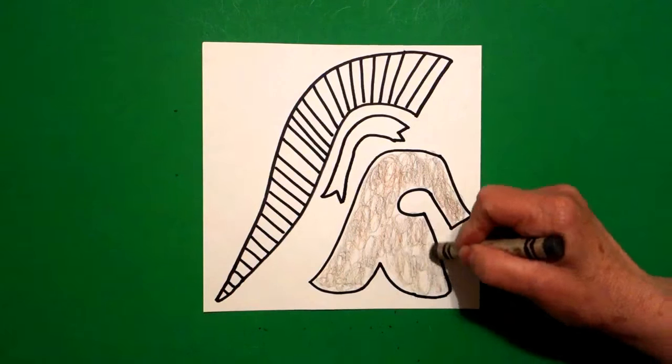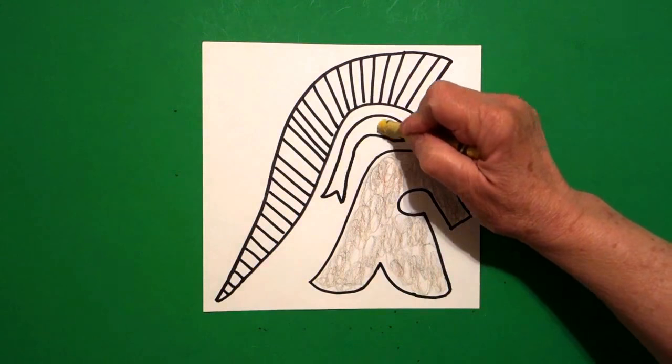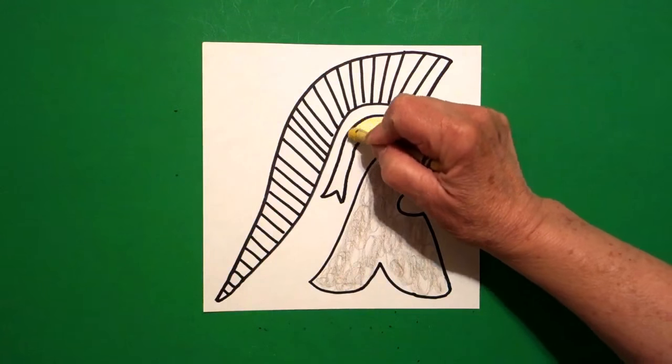Okay, then I'm going to take yellow and I'm going to color the ribbon part right here.